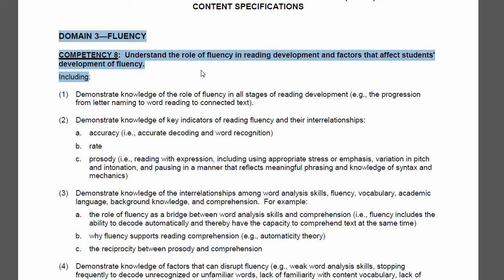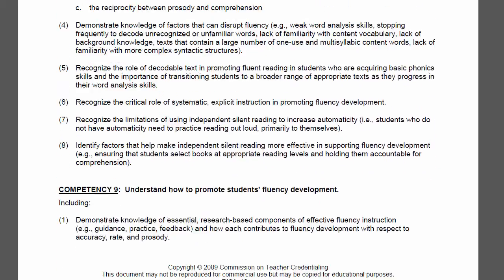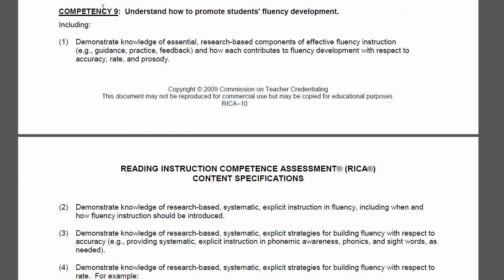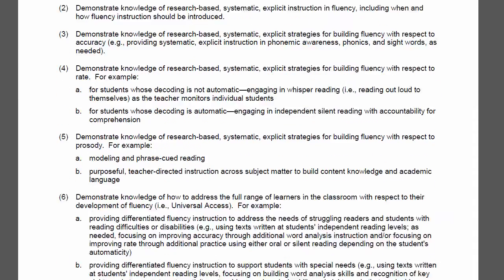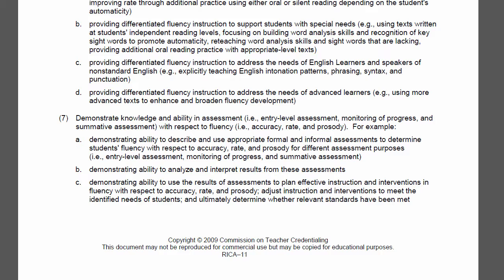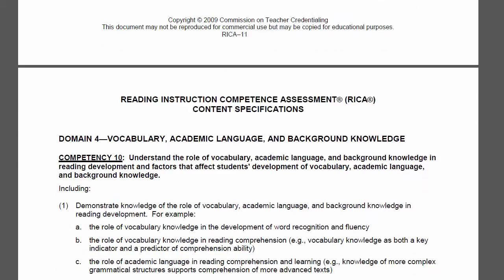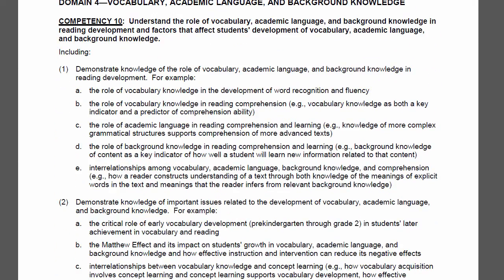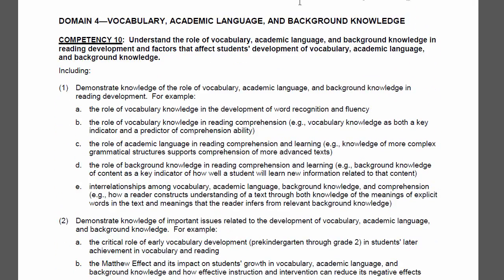You can see domain three has its number of competencies — competency eight is the role of fluency, and competency nine is how to promote it. All of the descriptors that I'm just skipping over are ones that you really need to read. I already covered the reading instruction model in a separate series of lectures; it takes about three or four hours to get through.